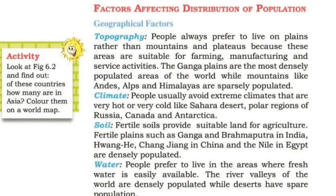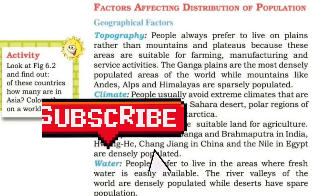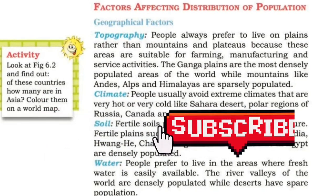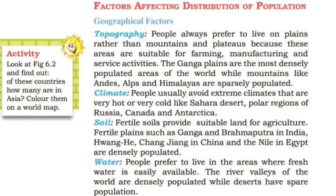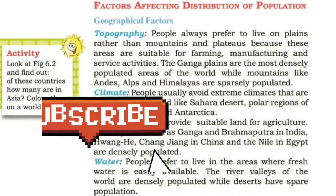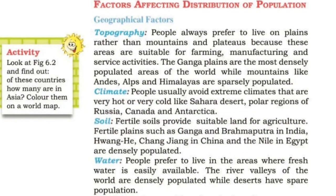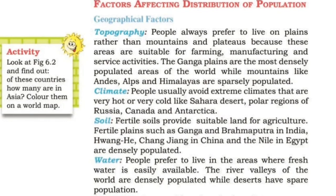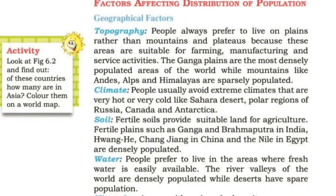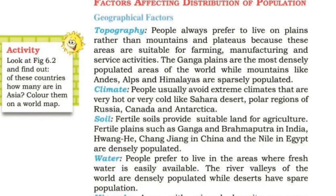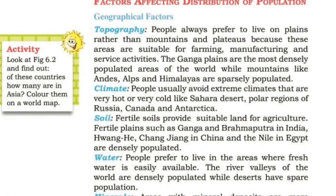Factors affecting distribution of population. Geographical factors: Topography. People always prefer to live on plains rather than mountains and plateaus, because these areas are suitable for farming, manufacturing, and service activities.